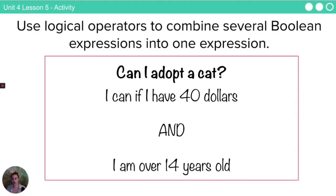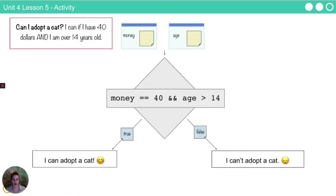What I want you to do is use logical operators to combine several Boolean expressions into one expression. Go back to this, can I adopt a cat? I can if I have $40 and I'm over 14 years old. Can you write a single Boolean expression that represents this whole statement? Here's an example of what that would look like. So my money is equal to 40 and my age is greater than 14.